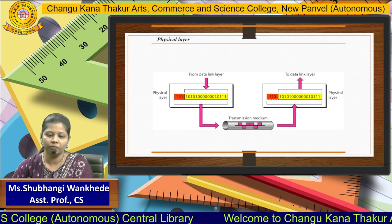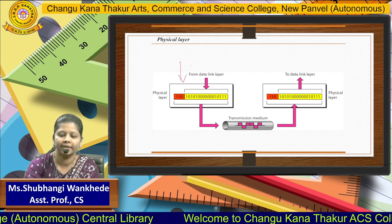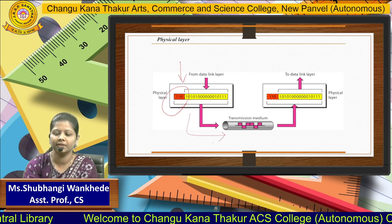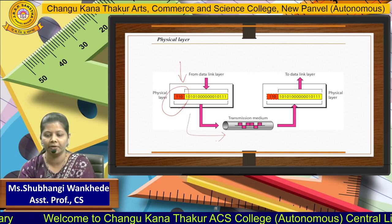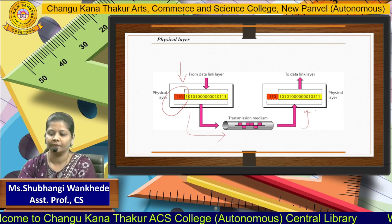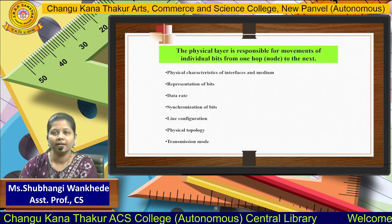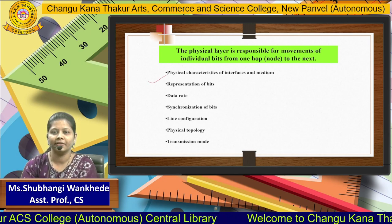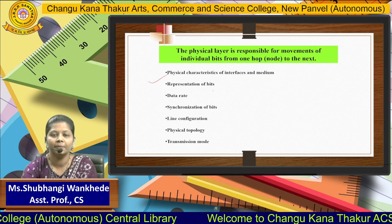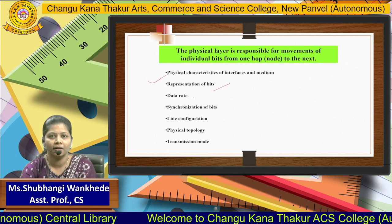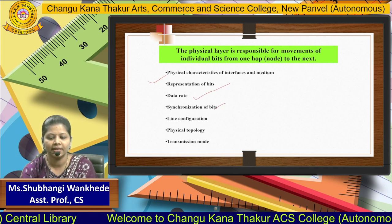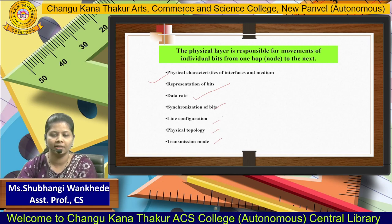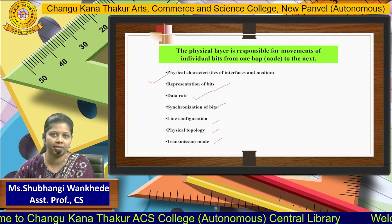The physical layer takes the data from the data link layer at the sender side, adds the header, and then sends it to the physical channel — the transmission medium — where it is received on the other side. The responsibilities of the physical layer include interfaces for the medium, representing data in the form of bits, checking the data rate, synchronization of bits, line configuration, physical topology, and transmission mode.